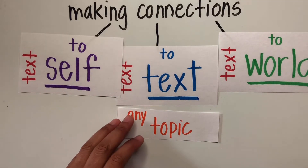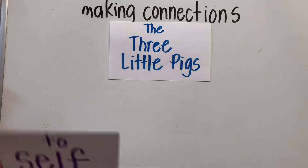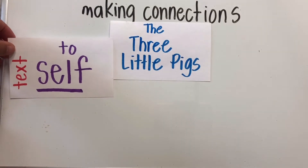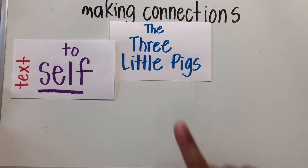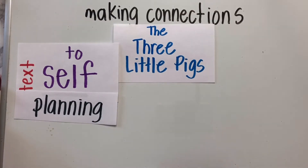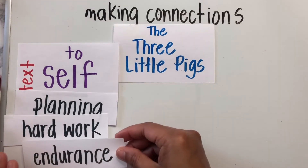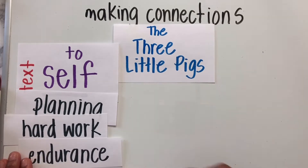Let's take a look at an actual text — The Three Little Pigs. I can make a text-to-self connection because the story of The Three Little Pigs talks about the planning stage of working very hard on something you would like to last, to endure.